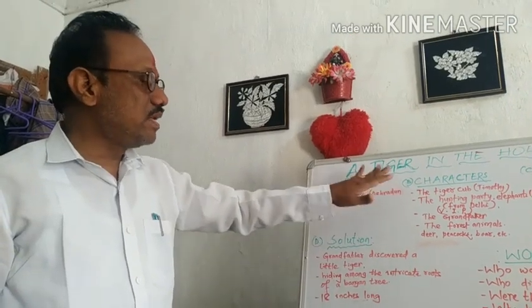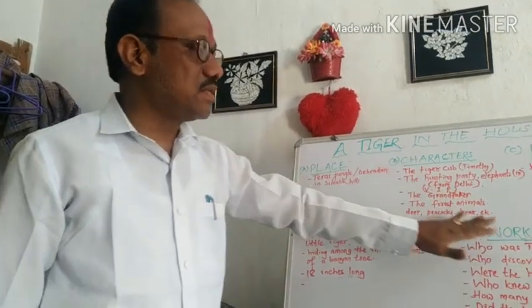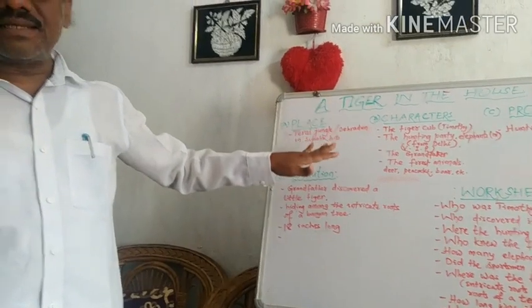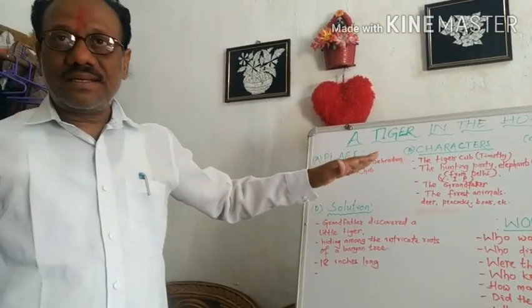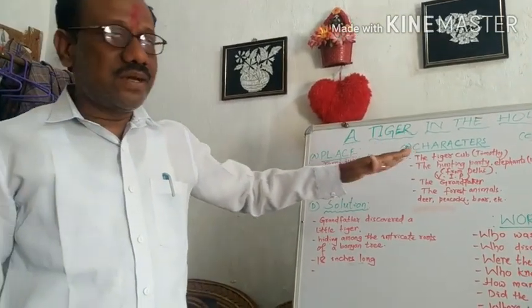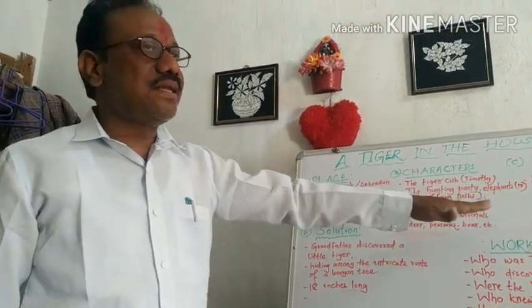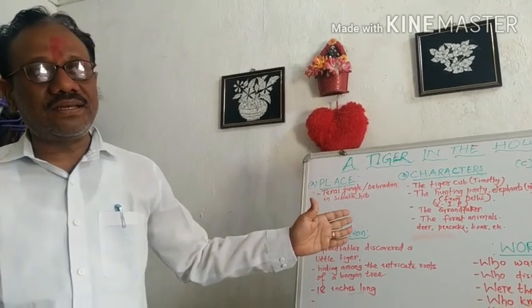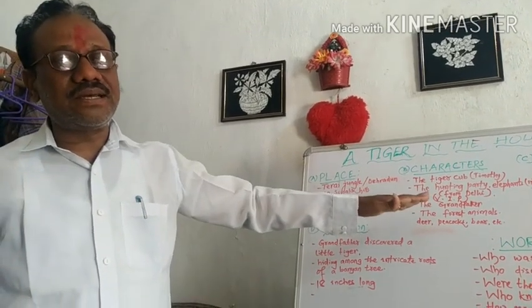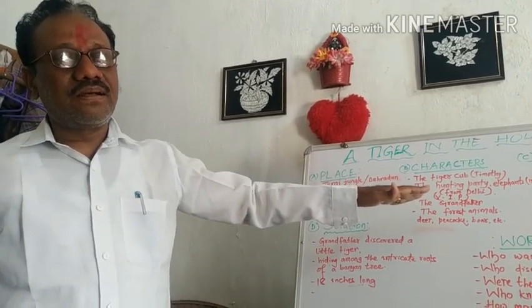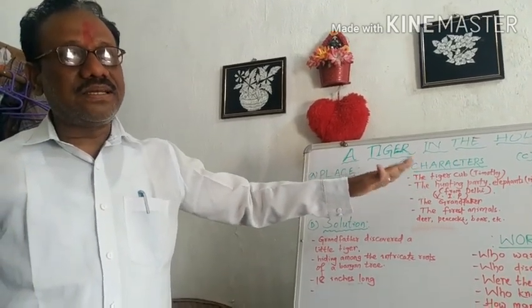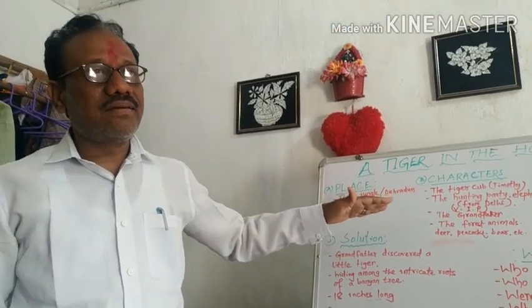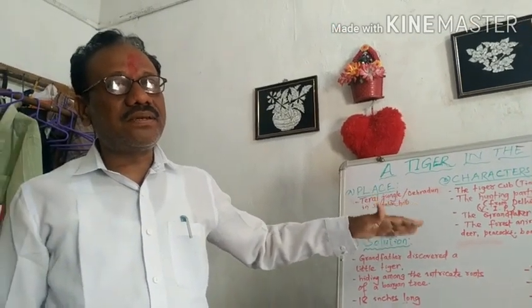So in this part of the story, we know that the persons were from Delhi. They included grandfather. Grandfather discovered a tiger cub and they brought it home.